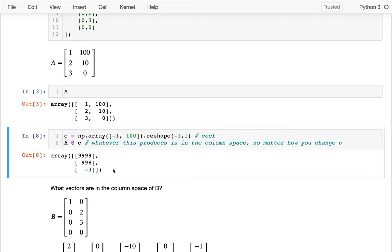So whenever I might ask you, hey, is this specific vector in the column space? If you think the answer is yes, it's really easy to prove it. Just come up with some coefficients here that demonstrate that you can produce that vector that you think is in the column space.